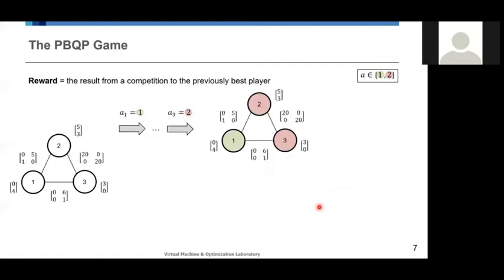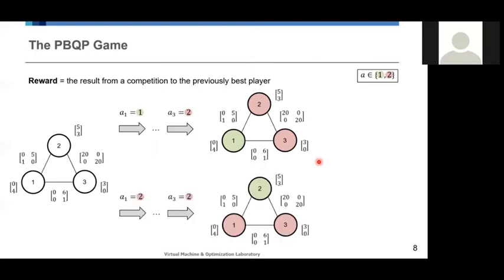Next, to define rewards for a single-player game, we have to somehow measure the performance of an agent. Because we have defined action as coloring one vertex, it always takes n actions to color all the vertices when the graph has n vertices. So after n actions, we can always calculate the cost function f, defined by the PBQP problem, and take it as its score. And then we can compare the score with our previously best agent's score so that we can judge if the current agent is doing better or not. If it did better, it gets a positive reward, and otherwise it gets a negative reward.